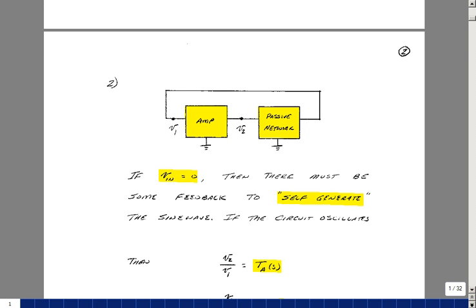Since we don't have a perfect L and C, we're going to have to probably use an amplifier with some kind of a passive network to create this sourceless circuit. Somehow I have to self-generate a signal, maybe do this through feedback, to create this sine wave.